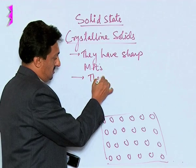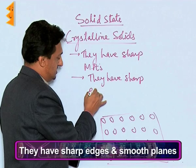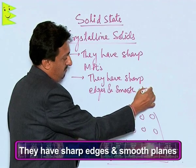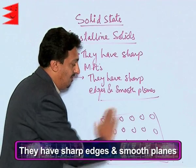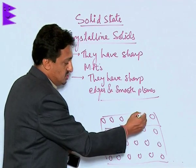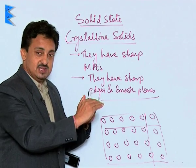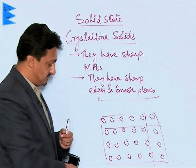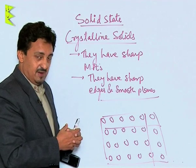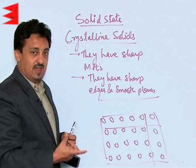Crystalline solids have sharp edges and smooth planes, because they have a regular arrangement of particles which gives them smooth planes and sharp edges. Whenever you break a crystalline solid you will get sharp edges and smooth planes. They also have high and sharp melting points because of strong interparticle forces, and the sharp melting point is due to the presence of only one type of interparticle forces.